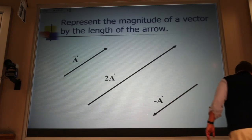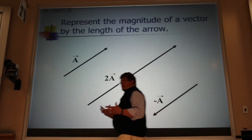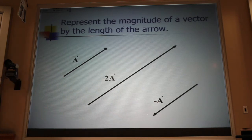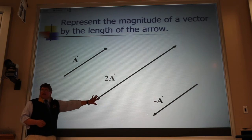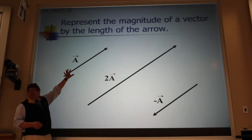We represent the magnitude by the size of the vector, the length of the vector. So we would say that this vector has twice the magnitude of that vector.